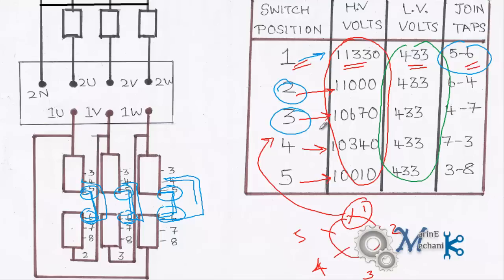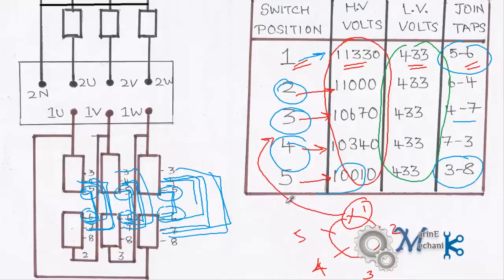So let's say for number 3, taps 4 and 7. Tap 4 and tap 7. When you select number 4, tap 7 and 3. And at last, 3 and 8 for 10,000 volts. 3 and 8. So this is how it is.